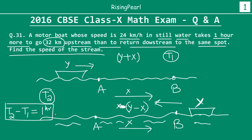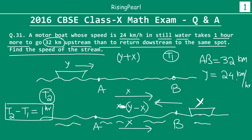Before we solve the question I wanted to make sure we understand what is given. The distance AB is given as 32 kilometers. The motorboat speed, which we took as y, is given as 24 kilometers per hour in still water. We have to find x, the speed of the stream. We are going to take this information and this equation and solve for x.